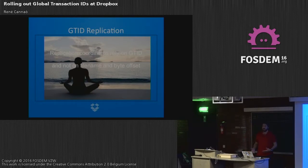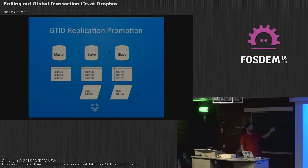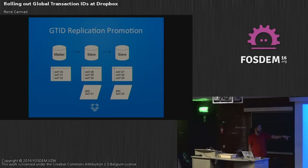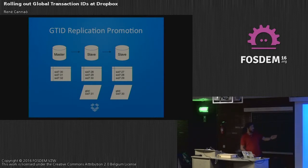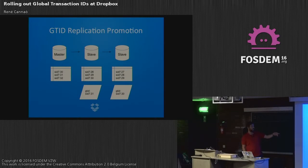Using GTID for replication makes things much easier because the concepts of filename and byte offset are completely gone. Going back to the previous example: the master is generating binary log events and we no longer care about filenames and positions. The slave simply tracks which GTIDs it has received. In our example the slave is one or two transactions behind, so it's writing transaction IDs 27, 28, 29, 30, and so on into its own binary log.